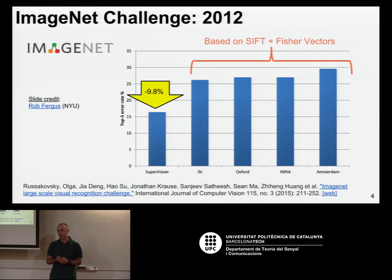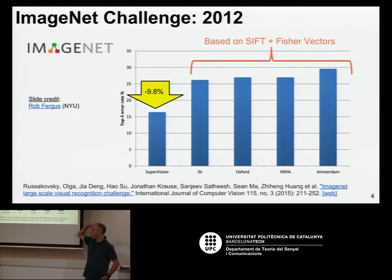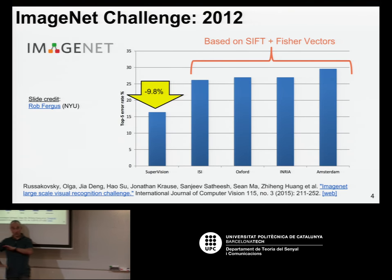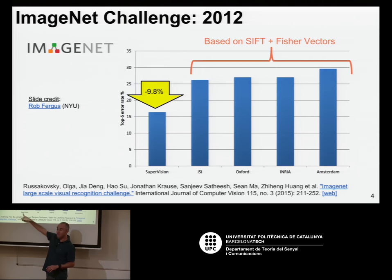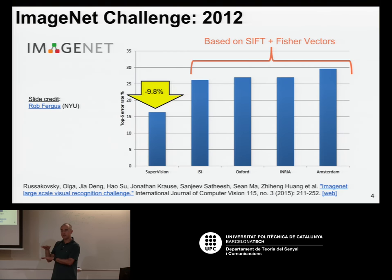Let's go to 2012. That year, the ImageNet image classification challenge had been running for a few years. Looking at the results — the y-axis is the top-five error rate, so lower is better — there was a team called Supervision that had a much lower error rate than the rest: almost 10% lower. In computer vision, that was huge — a game changer, a revolution.